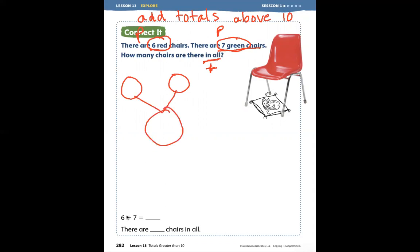Here's our number bond. There are six red chairs, there are seven green chairs. This is a part, this is a part, and this is the whole. We're going to put the two parts into the whole to make the total. If I have six red chairs, I'm going to draw six. Or let's write our equation first: six plus seven equals blank.